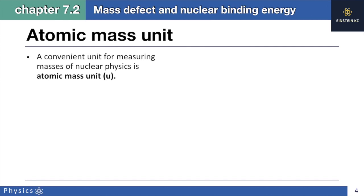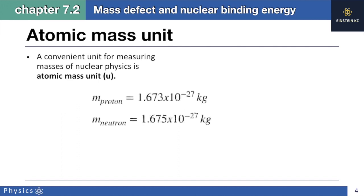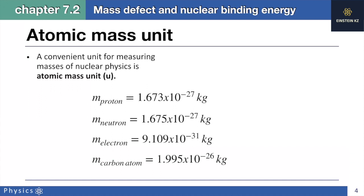In nuclear physics, a convenient way to represent the mass of atomic particles is called the atomic mass unit. Before we talk about atomic mass unit, let's quickly see the masses of atomic particles in kilograms. For instance, the mass of a proton is equal to 1.673 times 10 to the power of minus 27 kilograms. The mass of the neutron is approximately the same as the mass of the proton.